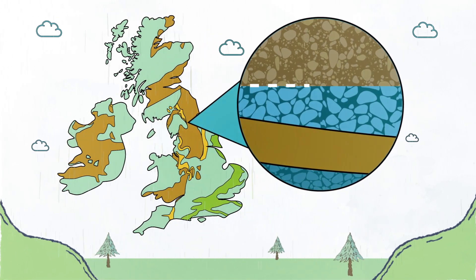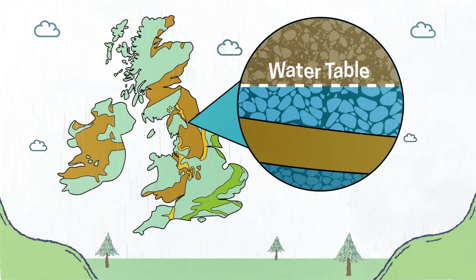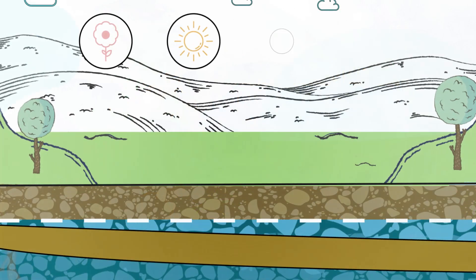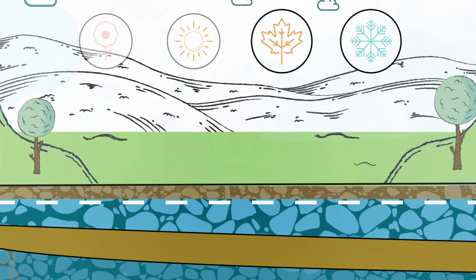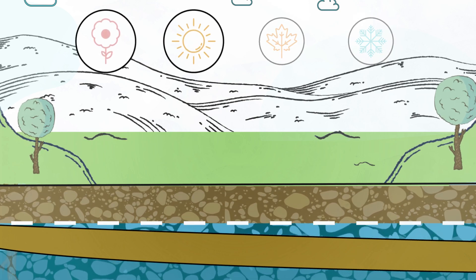The upper surface of the water in these aquifers is known as the water table. Throughout the year, the water table changes, rising closer to the surface during the winter months and dropping back down in the summer.